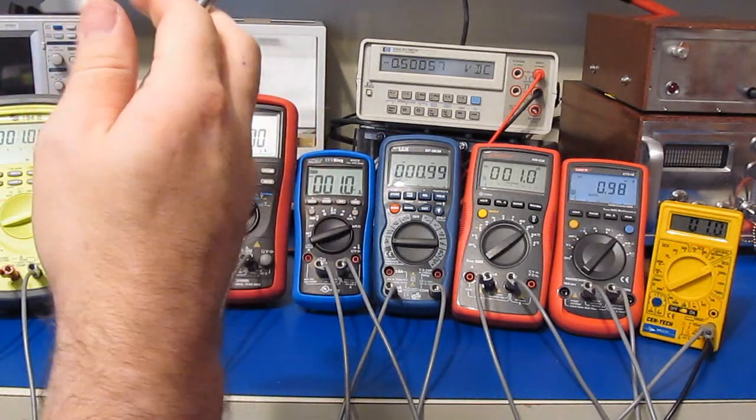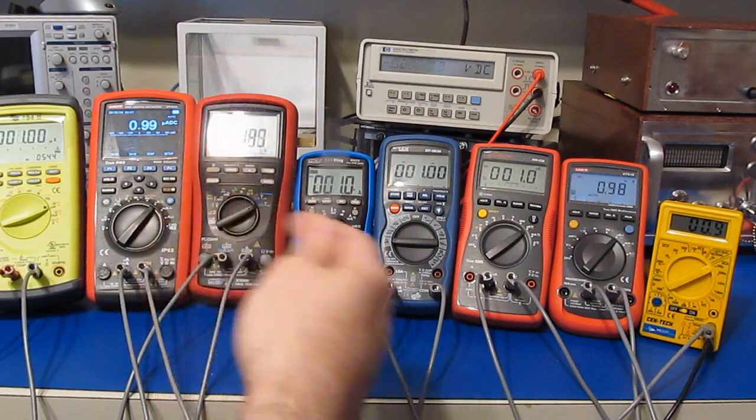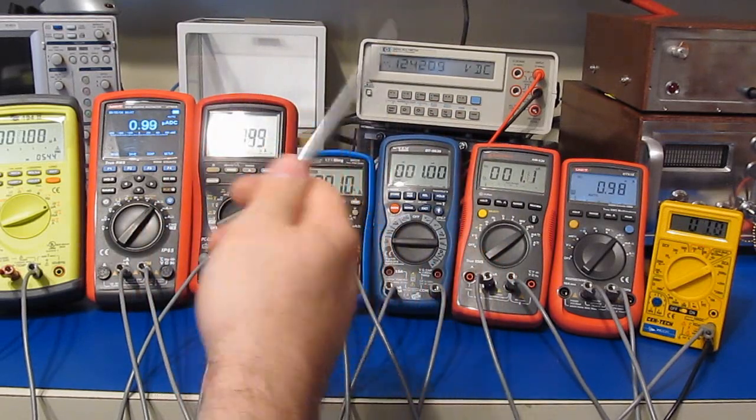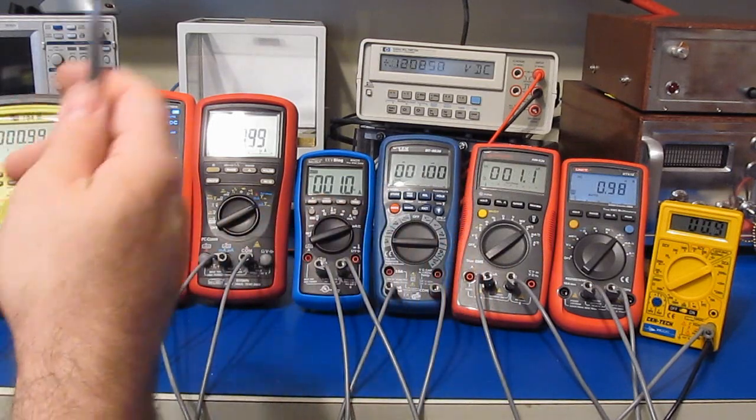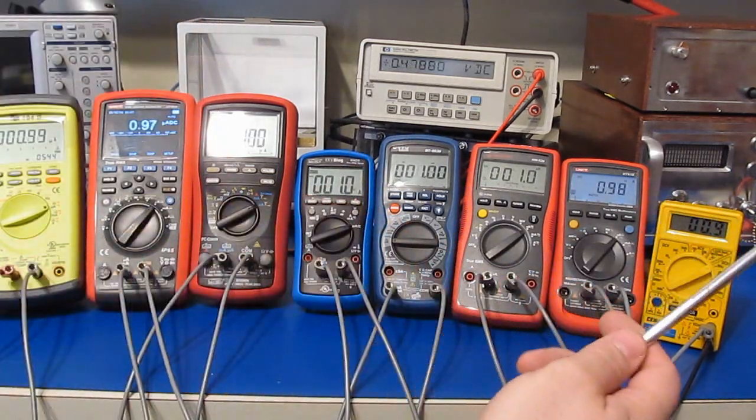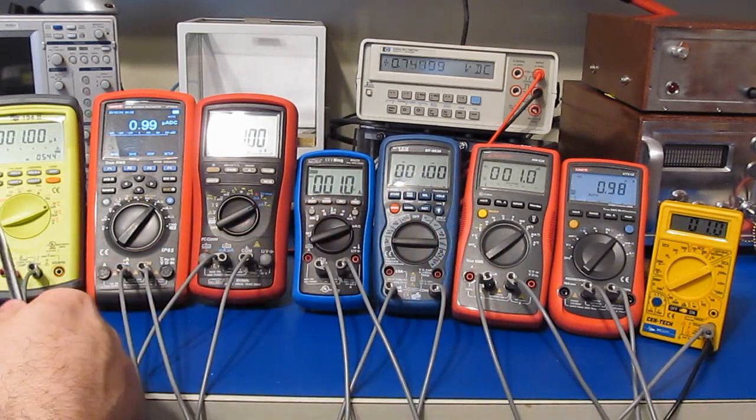Hello again, somebody was asking me about the EEV blog microcurrent gold. It's basically an amplifier with a shunt, and they use that to reduce the burden voltage when you're making low current measurements with a multimeter. I thought it'd be interesting just to measure the burden voltage using all these meters so you can see.